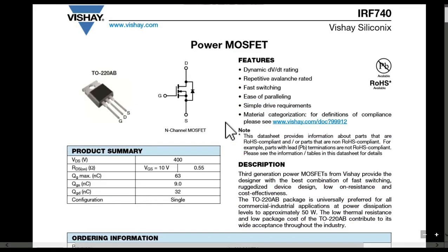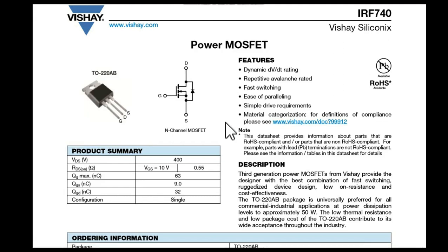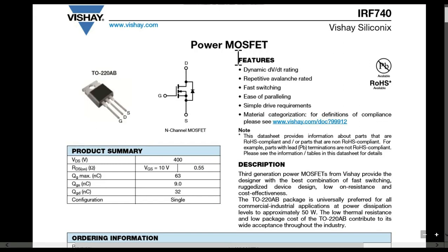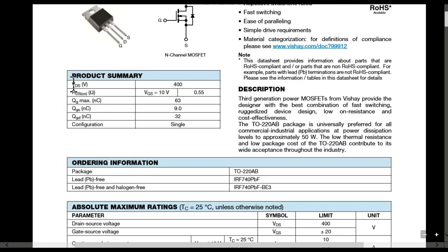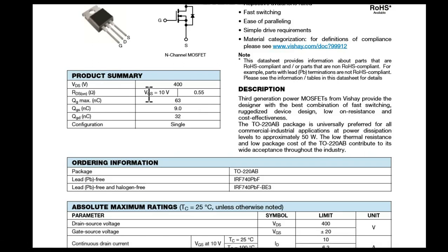Here we have the IRF740 power MOSFET and you can see different features: dynamic dV/dt rating and fast switching. Looking at the product summary, VDS for the IRF740 is 400 volt. RDS_on is 0.55 ohm when VGS is 10 volt. If you increase the VGS value, your RDS_on lowers — so RDS_on is inversely proportional to your VGS.